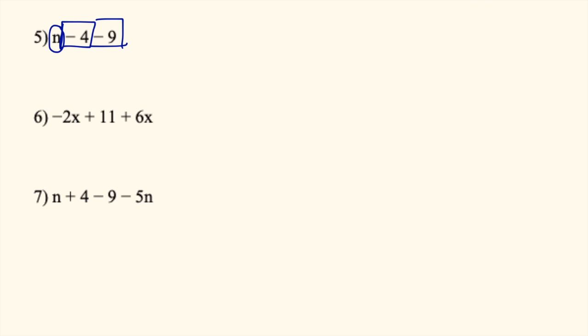So we have N, and there's no other N's to combine it with, so I'm just going to bring that N down. Then we need to combine negative 4 and negative 9. When we combine those, we get negative 13. So when we look at this, there's nothing else to combine. It's in the simplest form that we have. So N minus 13 is the answer.